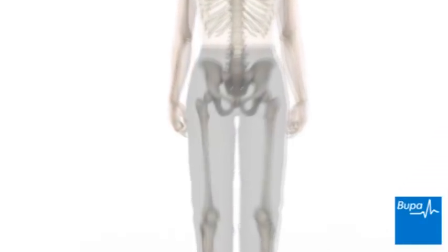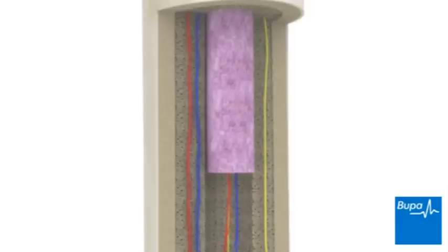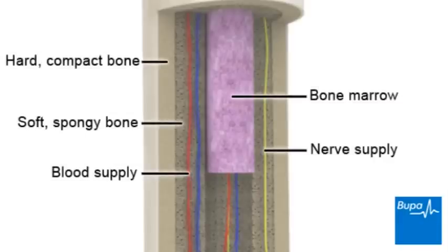Your body is protected and supported by a framework of bone called your skeleton. Your bones are very strong. They have three main parts: compact bone on the outside, spongy bone on the inside, and bone marrow right at the centre. Your bones also have a nerve and blood supply.